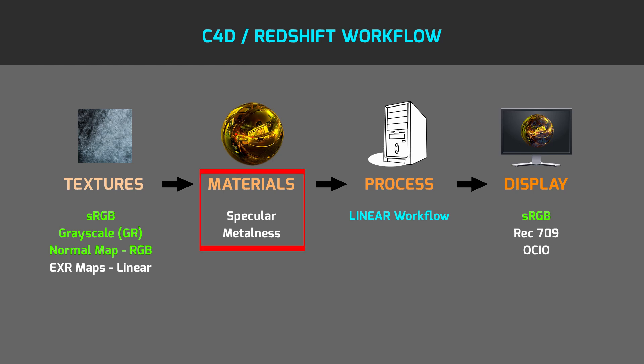As the next step, we have materials which are processing data from textures. Materials use two different workflows: specular or metalness. If you are using the specular workflow, you have textures such as diffuse, specular, and glossiness. If you are using the metalness workflow, you have textures such as base color, metallic, and roughness. This is another important factor where you have to follow the rules for correct results.